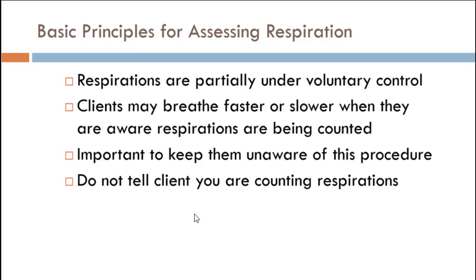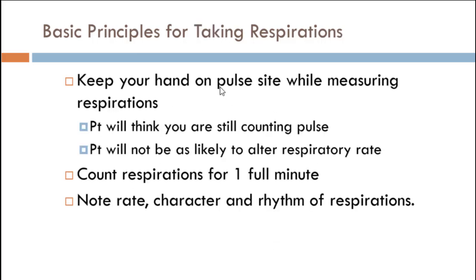The problem with assessing respirations is that they are partially under voluntary control — one of the few mechanisms that is both involuntary and voluntary. If you're getting your heart rate assessed, you can't directly tell your heart to speed up or slow down, but you can with your breathing. Once clients become aware that you are checking their breathing, it becomes hard to actually assess it. So you have to play a little trickery — keep your hand on the pulse like you're taking the heart rate, but you're really checking breathing.